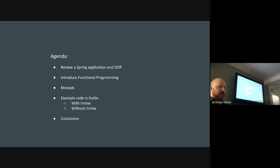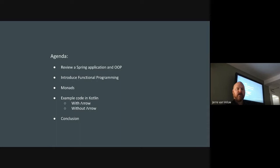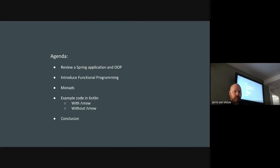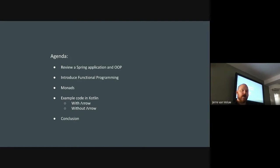Here's my agenda: first I'll review a classic Spring application as a baseline, since many of us started with Java, Spring, and Spring Boot doing dependency injection and object-oriented programming. From there I'll introduce functional programming — its benefits and how it differs from OOP. Then I'll touch on monads, because you can't avoid that topic. The main part will be about code in Kotlin with and without Arrow, applying functional programming paradigms pragmatically, and then a conclusion.